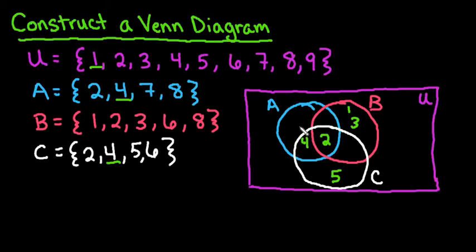Six is in both B and C, so we would put it here where B and C overlap. Seven is just A. Eight, we can see that it's in both A and B, so it would go in the overlap region for A and B. And then nine is our only number in the universal set that falls outside of all three of the other sets, A, B, and C.